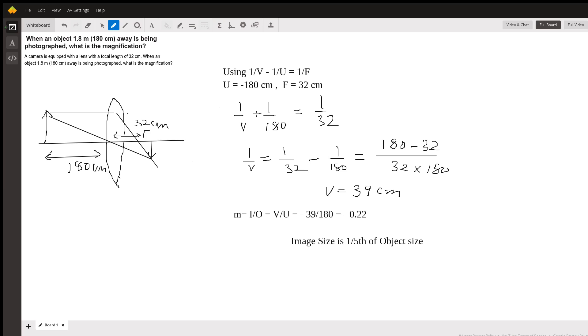The object distance is 180 centimeters. Therefore, the magnification, which is the size of the image to the size of the object (i/o), is also the distance of the image to the distance of the object. The distance of the image is negative 39 approximately, divided by the object distance, which is 180 centimeters.